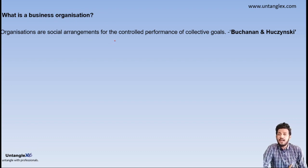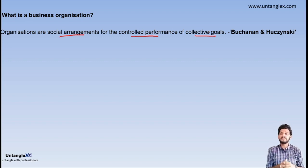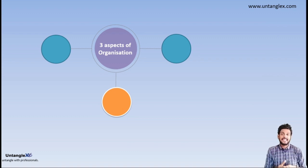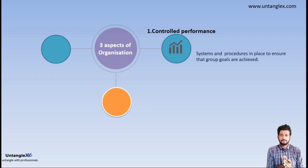The formal definition: organizations are a social arrangement for the controlled performance of collective goals. In this definition there are three aspects. The first aspect is controlled performance — there should be a systematic performance from the business to ensure they are achieving the goal.